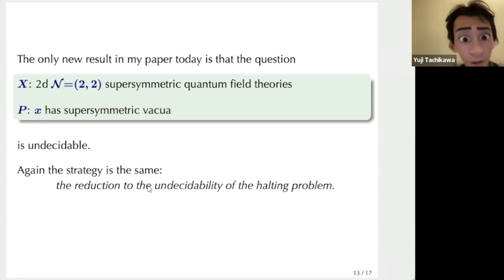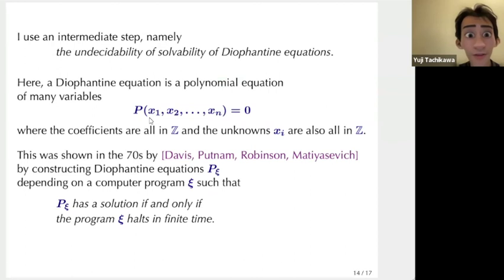The only new result in my paper today is that the following question is also undecidable. Here, the class of systems we consider is 2D N=(2,2) supersymmetric quantum field theories. And you'd like to ask whether x has supersymmetric vacua. So that's undecidable. Again, the strategy is the same. You reduce the undecidability to the undecidability of the halting problem.